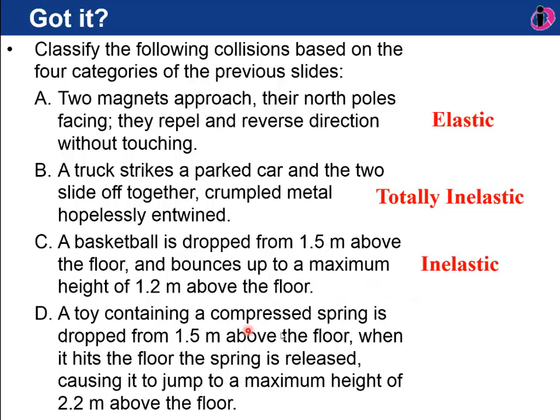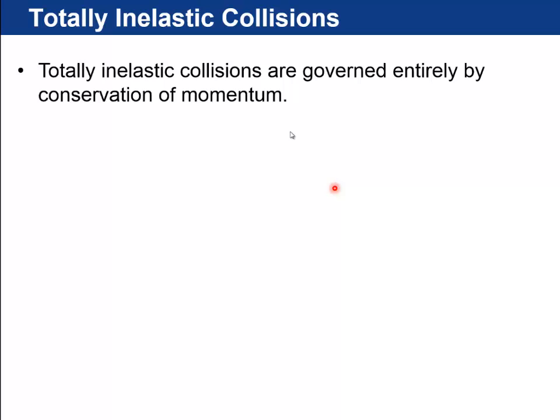And last one. A toy containing a compressed spring is dropped from 1.5 meters above the floor, and when it hits the floor, somehow that spring is released, and it jumps up to a maximum height of 2.2 meters. That's what we call an explosive collision. Just after it comes away from the floor, it has more kinetic energy than it did before because it came from the elastic energy in the spring.